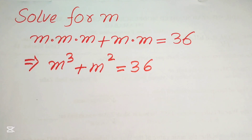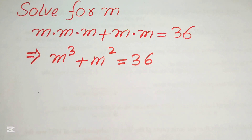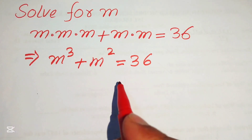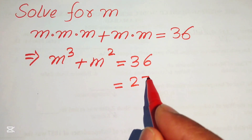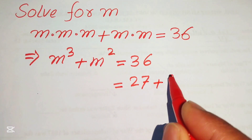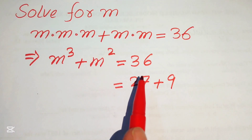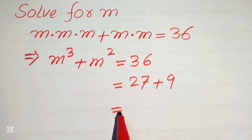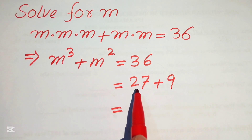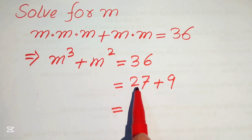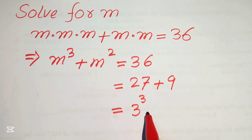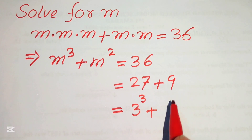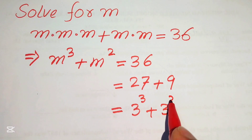Here we need to focus on the right hand side. We have 36 and now we break this 36 and write it as 27 plus 9. We know that 27 plus 9 equals 36. Now we write 27 in prime factor form as 3 cubed, and similarly 9 as 3 squared.